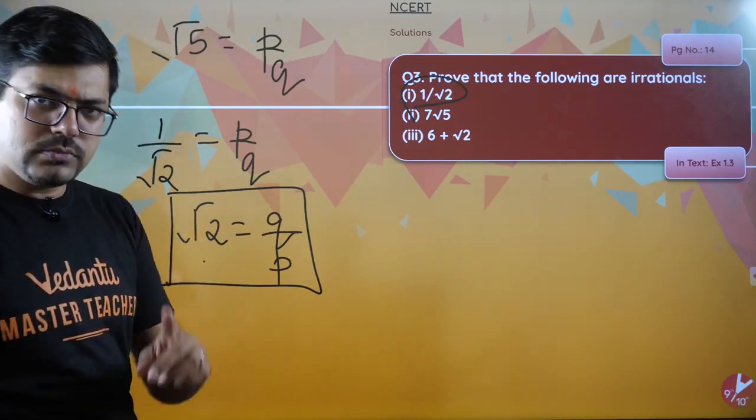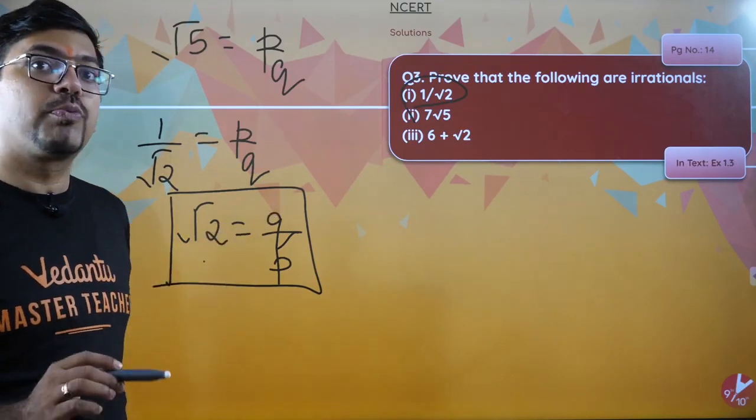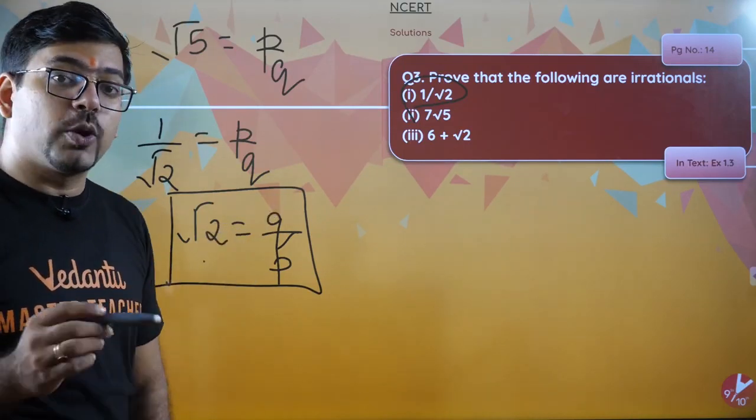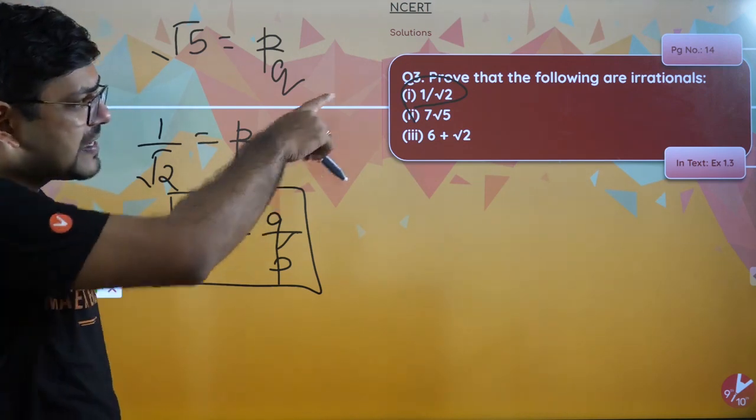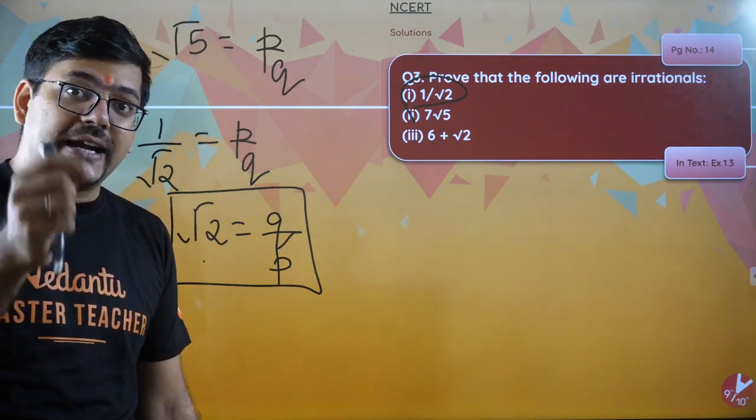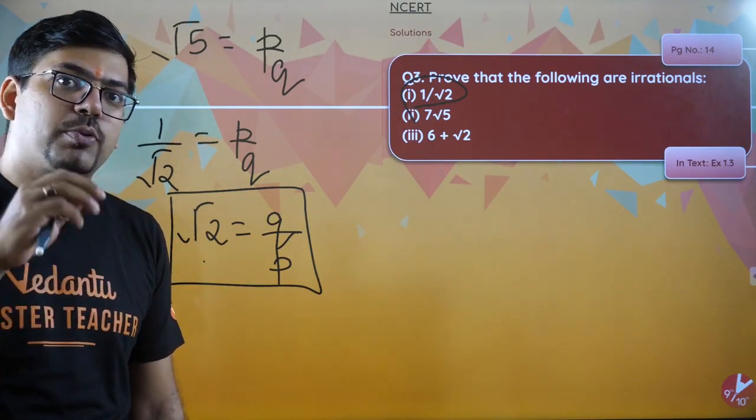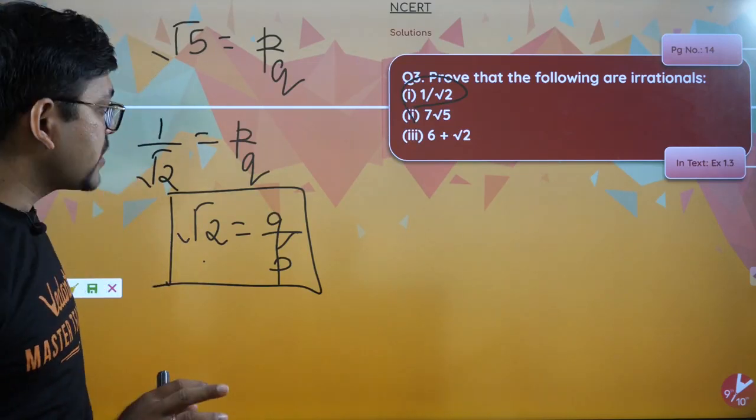You don't have to prove again root 2 as irrational. In that previous question also, I had made you understand this. You don't have to prove again time and again that this is irrational or this is rational. You don't need to prove it, at least in these types of questions where it is not directly being asked from you.